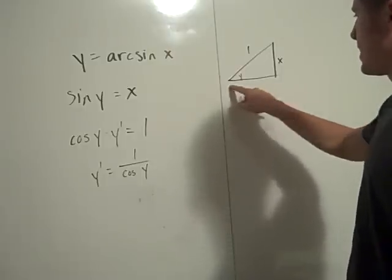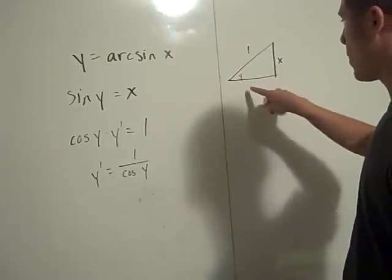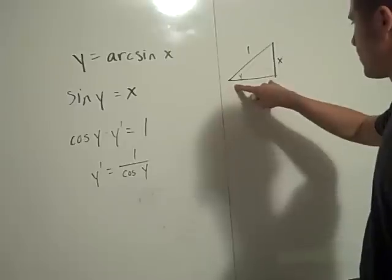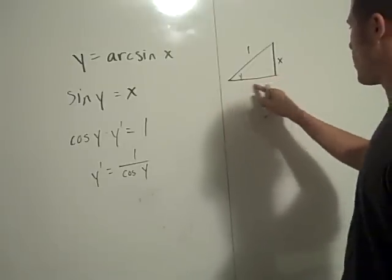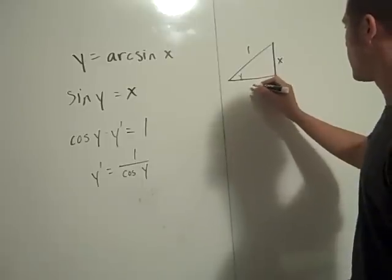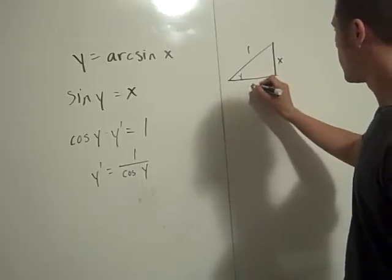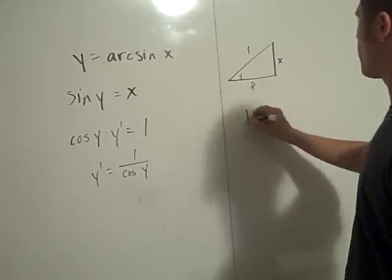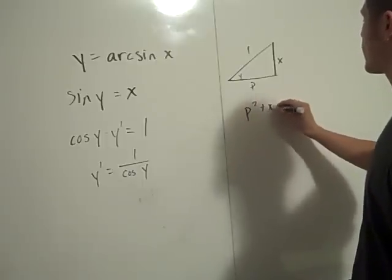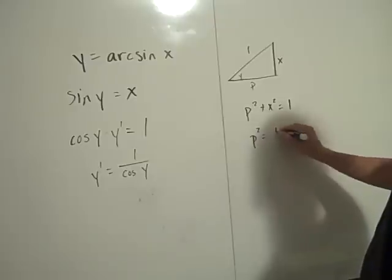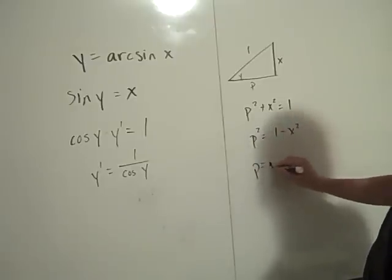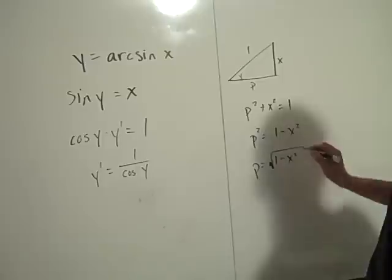So the question is, what is this length right here because I want to know what cosine y is here. And so we're just going to use the Pythagorean theorem. So this is some unknown, maybe I'll just call it P. So P squared plus x squared has to equal 1. And so P squared is 1 minus x squared and therefore P is the square root of 1 minus x squared.